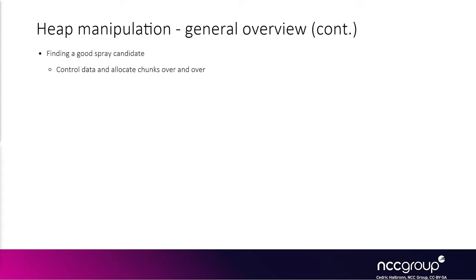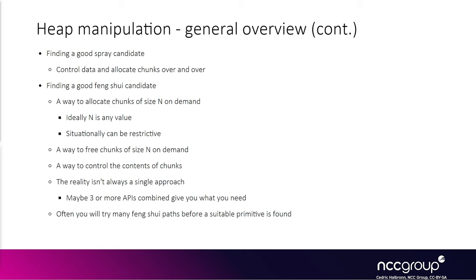Finding heap feng shui candidates is a little bit harder because you generally want to manipulate things with more granularity. You want to be able to control the size of the allocation, or have a few options for the size, because for something like a use-after-free you might be replacing something like a k enlistment structure which is of a specific size. So you want to find some heap manipulation code path that lets you specify a size that matches the target structure — in this case matching the size of the k enlistment allocation.